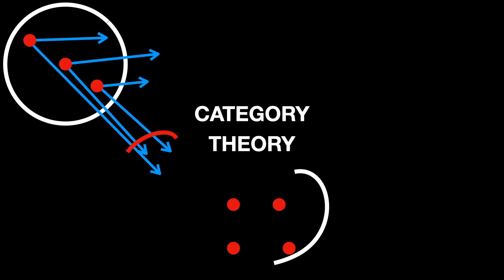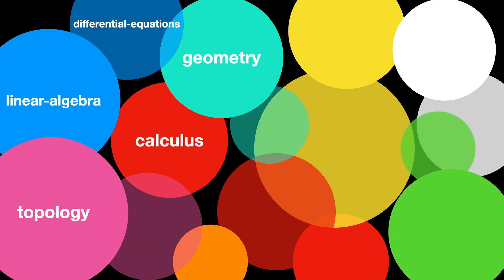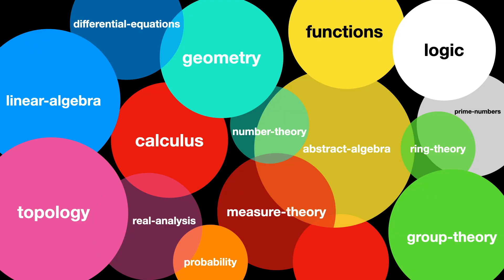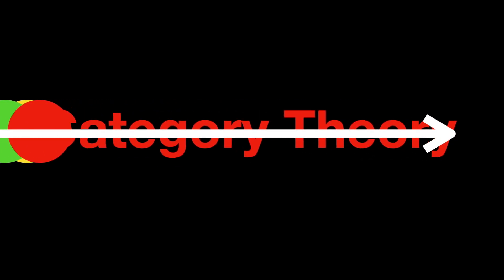Category theory — a remarkable area of mathematics that can reveal deep connections between polar opposite disciplines. But did you know that there were six discoveries that followed one another without which category theory would never happen? How did it all start?